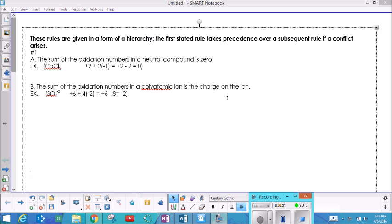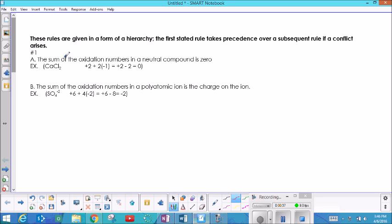These are just the rules for learning how to assign oxidation numbers. The first rule is all about groups of stuff. Rule number one says the sum of the oxidation numbers in a neutral compound, and this is kind of redundant because compounds by definition are neutral. For example, they give you CaCl2. What they're saying is the oxidation number of Ca and the oxidation of Cl is going to equal zero.